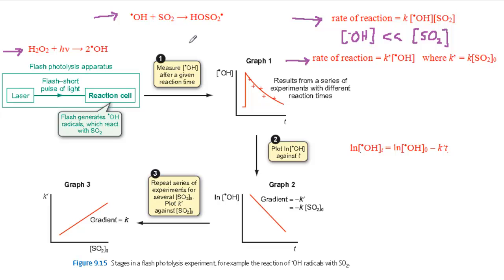In stage 1, a series of experiments is carried out, each with the same initial concentration of hydroxyl radicals and the same initial concentration of SO₂. Each experiment measures the hydroxyl radicals at a different time after the start of the reaction. Graph 1 shows the results: the measured hydroxyl radical concentrations are plotted against the reaction time T, the time from the flash at the start of the reaction. The concentration of hydroxyl radicals rises very steeply and then falls away as the radicals react.